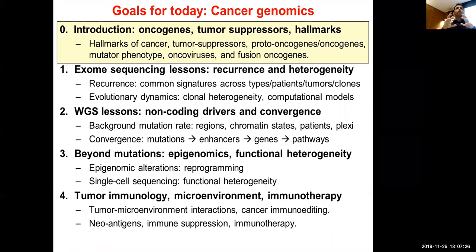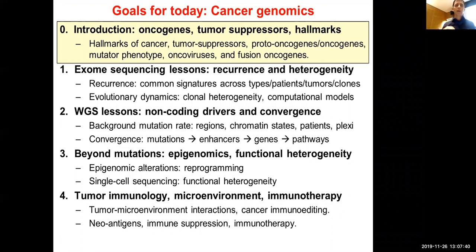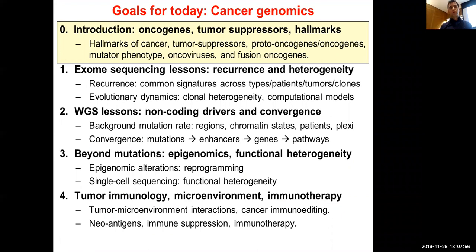Cancer behaves in many ways very differently from the complex traits we've talked about already. This lecture brings together so many different processes: on one hand selection and common variants or rare variants, and on the other hand evolution, rapid evolution, and mutations. Cancer has both.